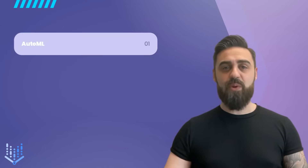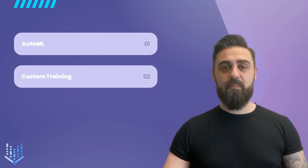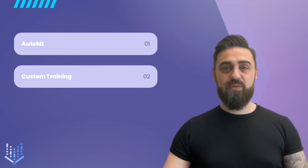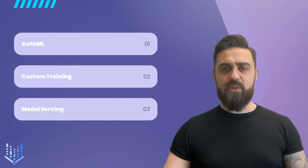Before we dive into the benefits of Vertex AI, let's take a closer look at some of its key features. Vertex AI offers an AutoML suite that allows you to build custom models without any prior machine learning knowledge. You can simply upload your data, select the type of model you want to build, and let Vertex AI do the rest. If you're a data scientist or a developer, you can build custom models using popular frameworks like TensorFlow, PyTorch, and scikit-learn, training on large datasets using Google's powerful infrastructure, which can help you reduce training time significantly. Once your model is trained, you can easily deploy it to production using Vertex AI's model-serving infrastructure, which allows you to scale your models to handle millions of requests without any additional configuration.